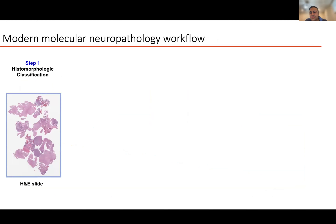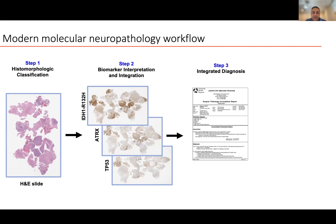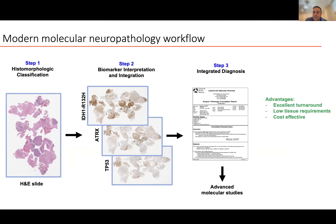So let's look at the workflow to understand where AI could be leveraged. The first step is we look at H&E stained tissues — tissue sections recovered from patient surgeries stained with a pink and purple dye. Using the architecture of the cells, we're able to predict what disease that person has to a fairly good degree. We usually incorporate some biomarkers after — immunohistochemical stains with a turnaround time of one to two days. We write a report, integrate that information together, and there may be more advanced tests requiring a few extra weeks. The downside to this pathology workflow is that for the last century, there are many manual steps and it's very qualitative and operator dependent.